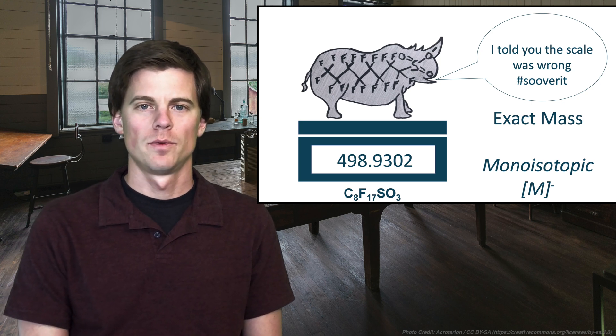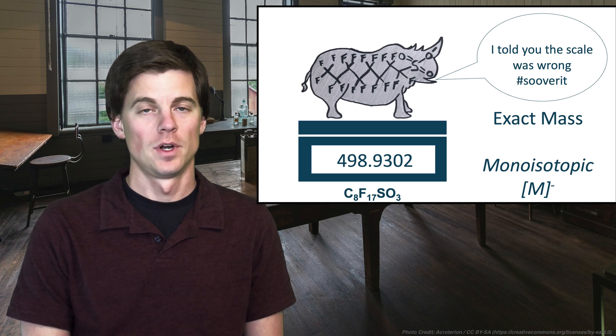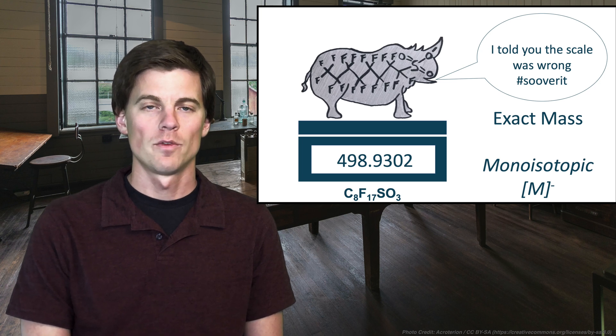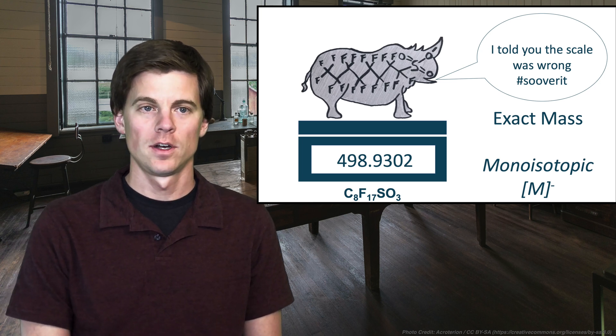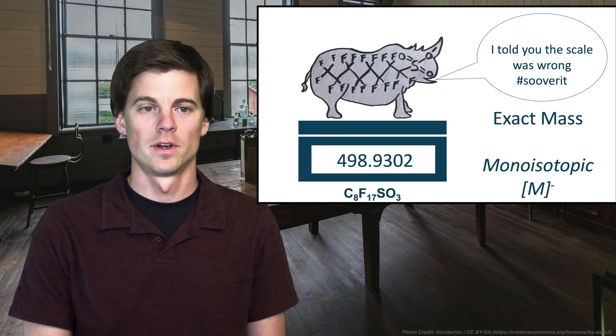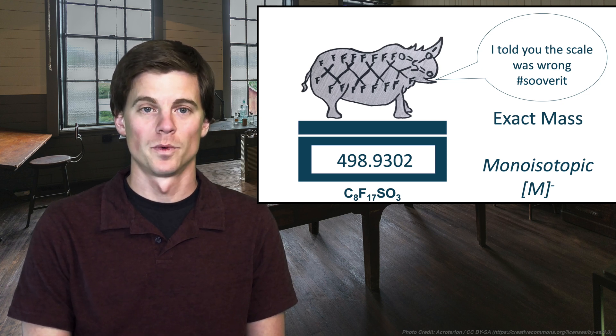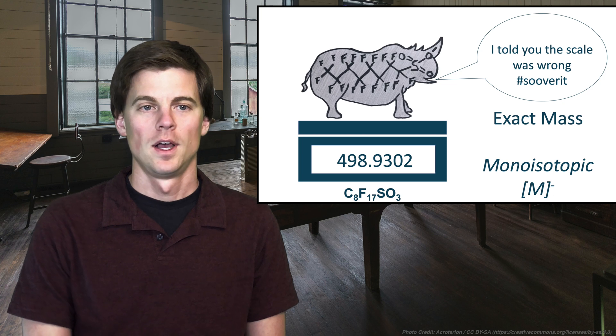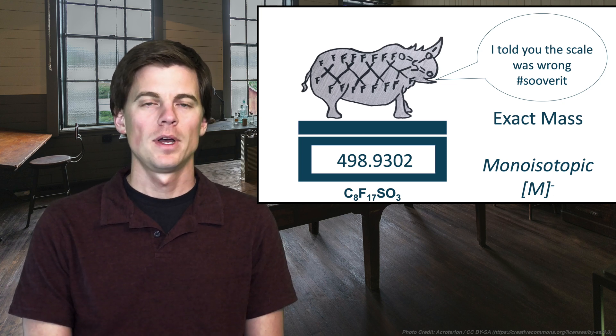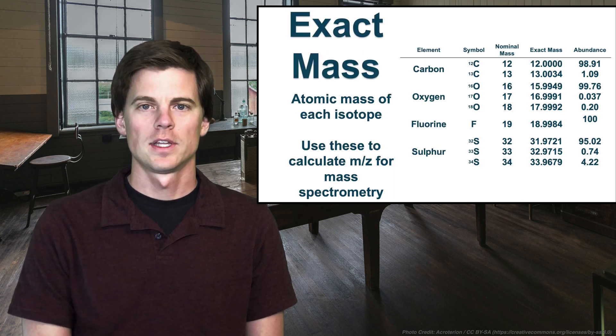Okay, so back to PFOS. When we do this, when we use that chart that I just showed and add up the mass of our PFOSaurus, what we come up with now is 498.9302, not 499.12. And we've also added in the mass of an electron here because PFOS is negatively charged. It has that minus up in the rhinoceros horn. And so that minus is the mass of an electron. It's a very small mass, but it matters, especially when we're going to this decimal point. So now this is what PFOS is, but it's still not the whole story of the mass of PFOS.